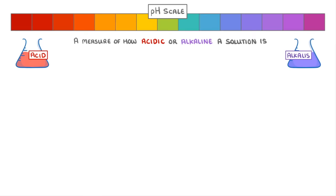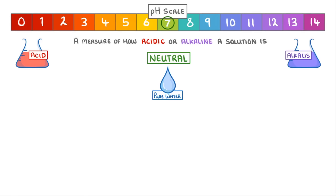With low numbers being most acidic and high numbers being most alkaline. And if the substance is neutral, like pure water, then the pH would be 7, which is neither acidic nor alkaline.